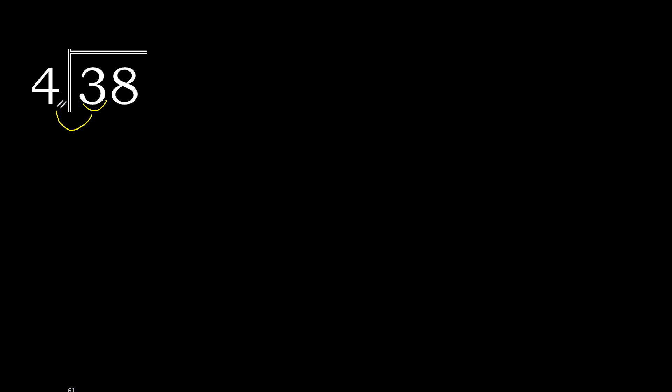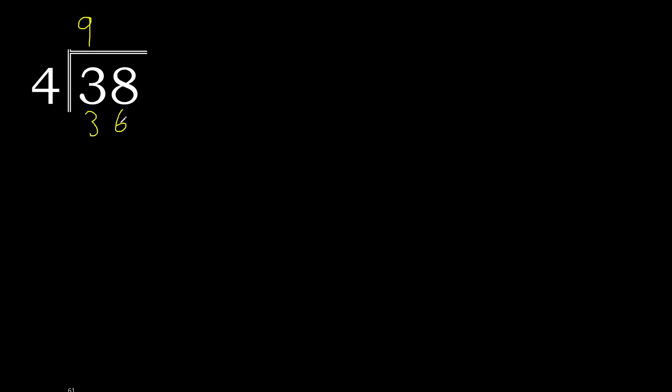38 divided by 4. Here 3 is less, therefore with the next digit: 38 is not less. With 38, 4 multiplied by which number gives a remainder of 2? 38, but not greater. 4 multiplied by 9 is 36. 36 is not greater than 38. 38 minus 36 is 2.